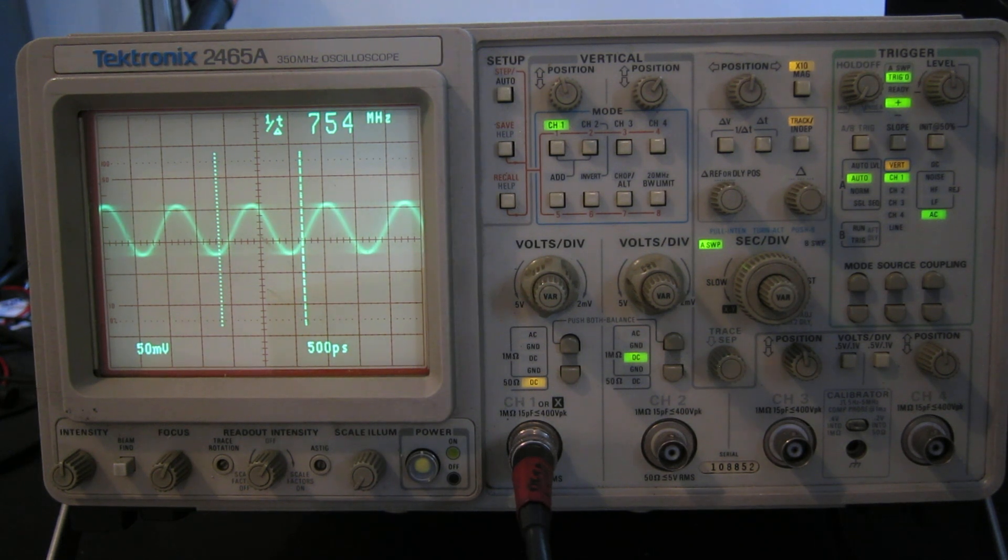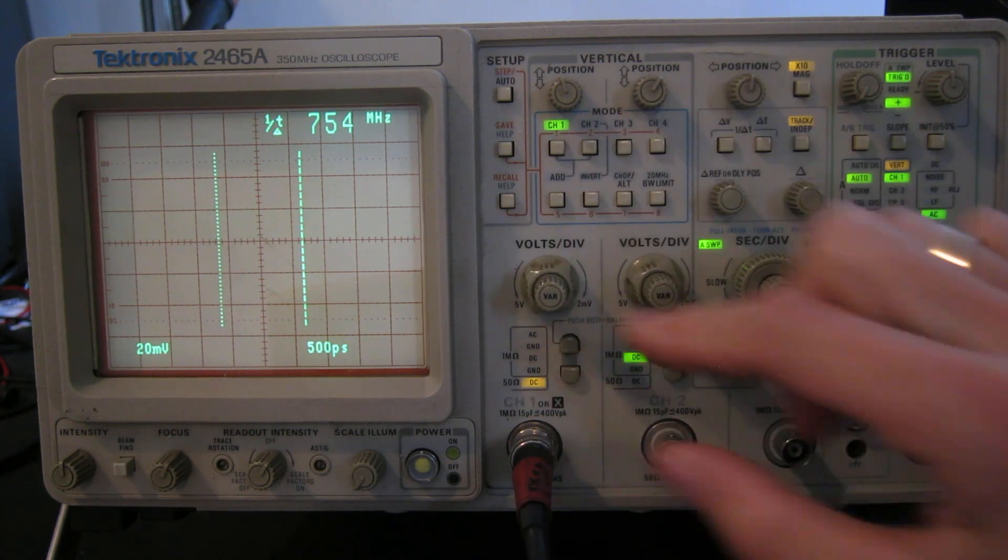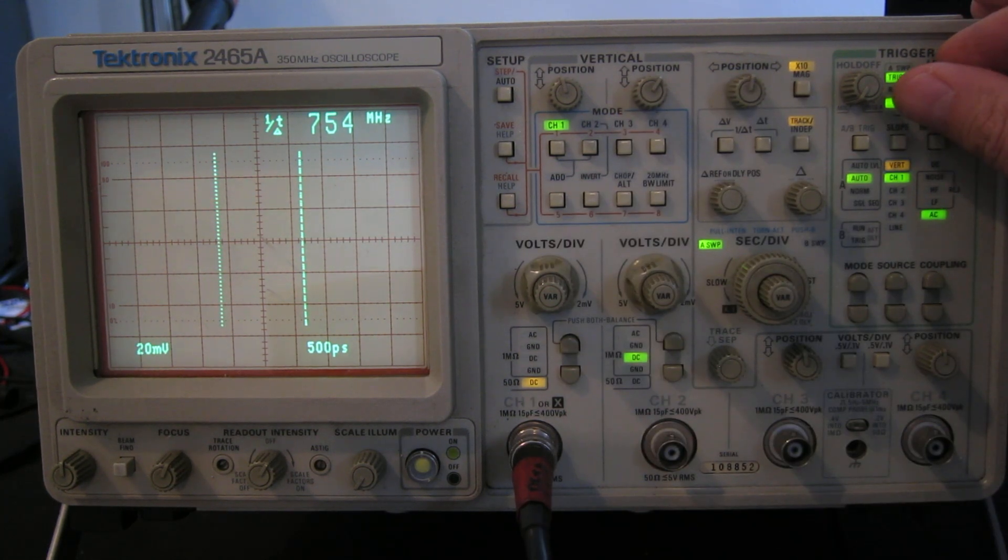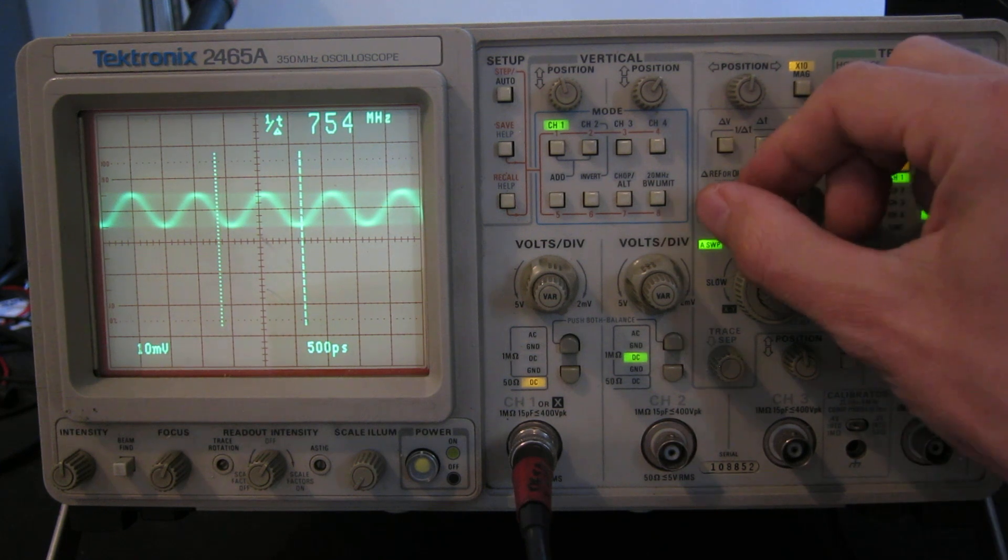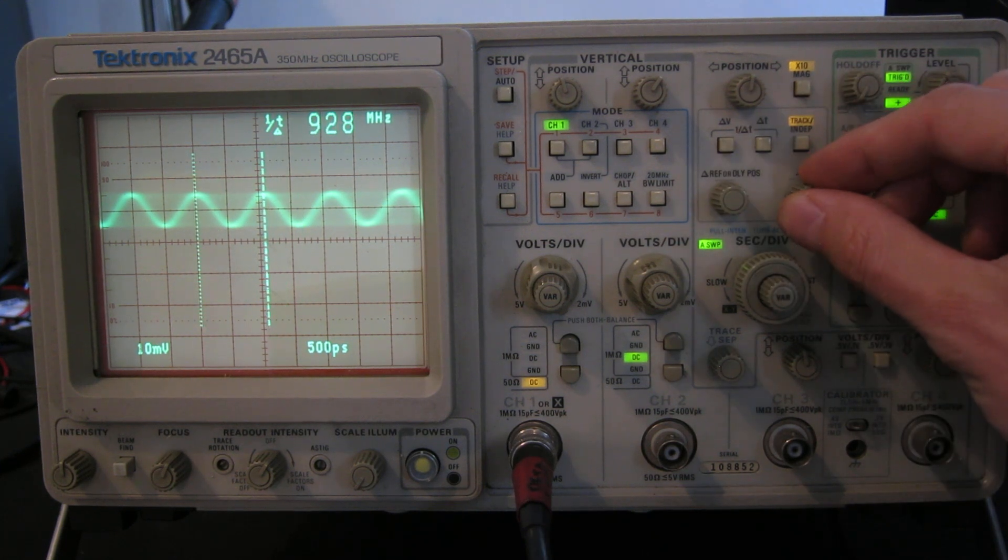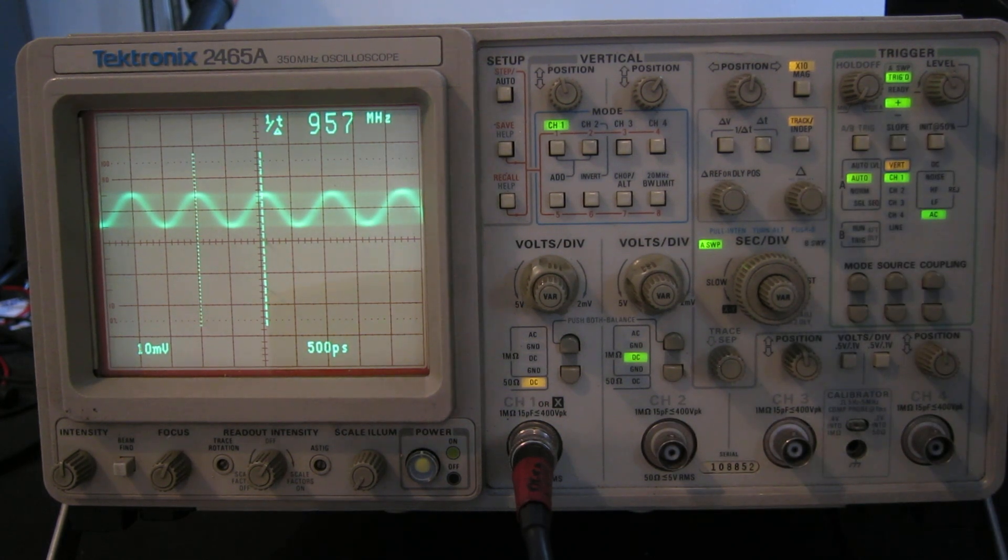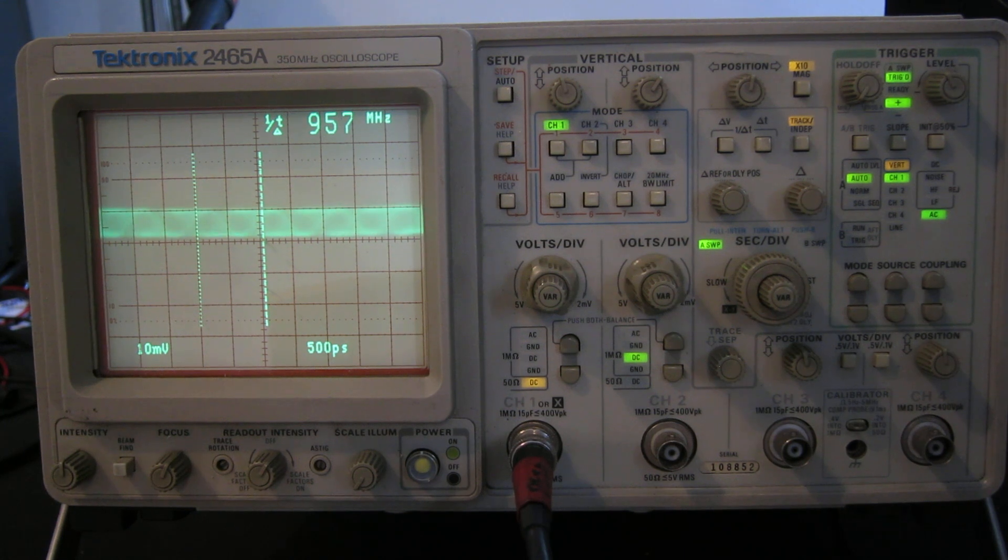Let's go further. 850, 950 megahertz. We've still got something. Will it trigger? Will it trigger on there? Oh yeah, there we go, look. 950 megahertz. We still have a trace. It's still stable. It still triggers okay. We'll see if we can get to the magic gigahertz. 60, 70, 80, 90. That's one gigahertz.